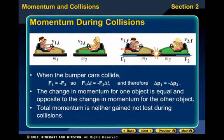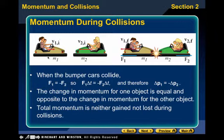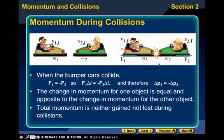The total momentum is neither gained nor lost in the collision. The momentum of the first bumper car and the second bumper car added together is equal to the first and second bumper car momentum after the collision.